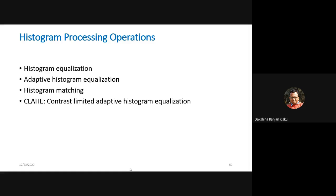Today we will extend this discussion by introducing histogram processing operations. There are four different types: histogram equalization, adaptive histogram equalization, histogram matching, and contrast limited adaptive histogram equalization. However, we will discuss only two — histogram equalization and histogram matching — as these are the basic operations on which the other two are developed.